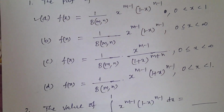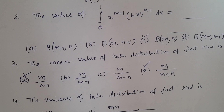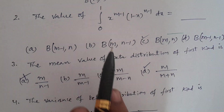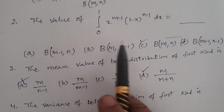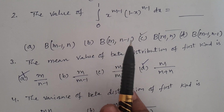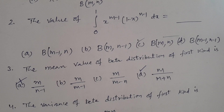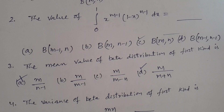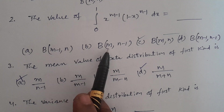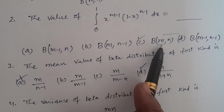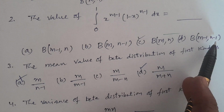Now we move to the second question. Question 2: The value of integral from 0 to 1 of x^(m-1) · (1-x)^(n-1) dx is equal to? Options: A — β(m-1, n); B — β(m, n-1); C — β(m, n); D — β(m-1, n-1).